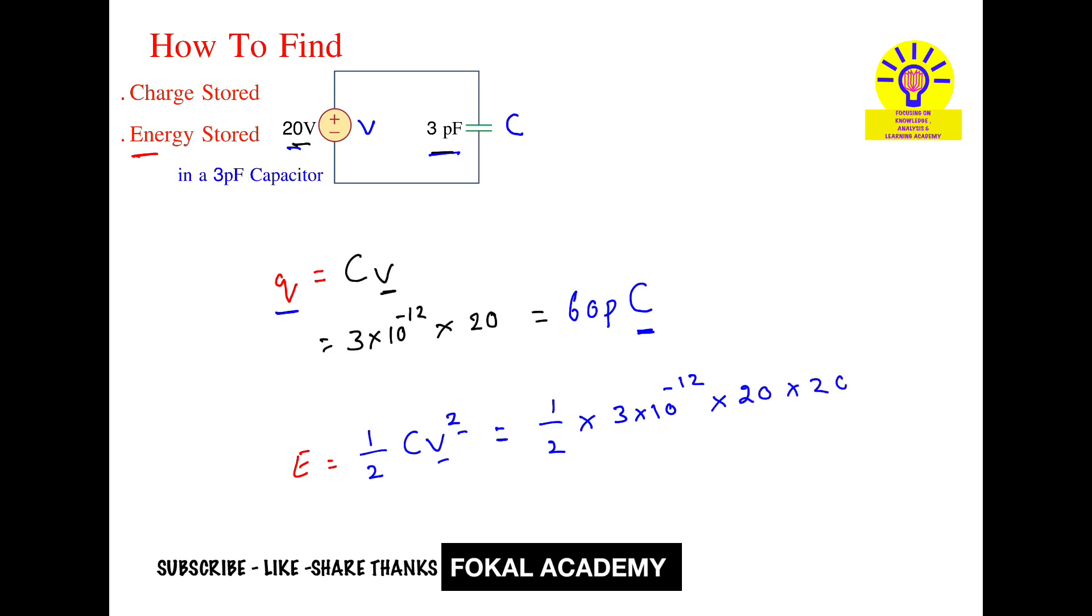20 into 20. So 2 ones, 2 tens. So that's equal to 3 into, it becomes 200 into 10 power minus 12. That's equal to, so this value is 600. So this is nothing but pico, so just write it as P.